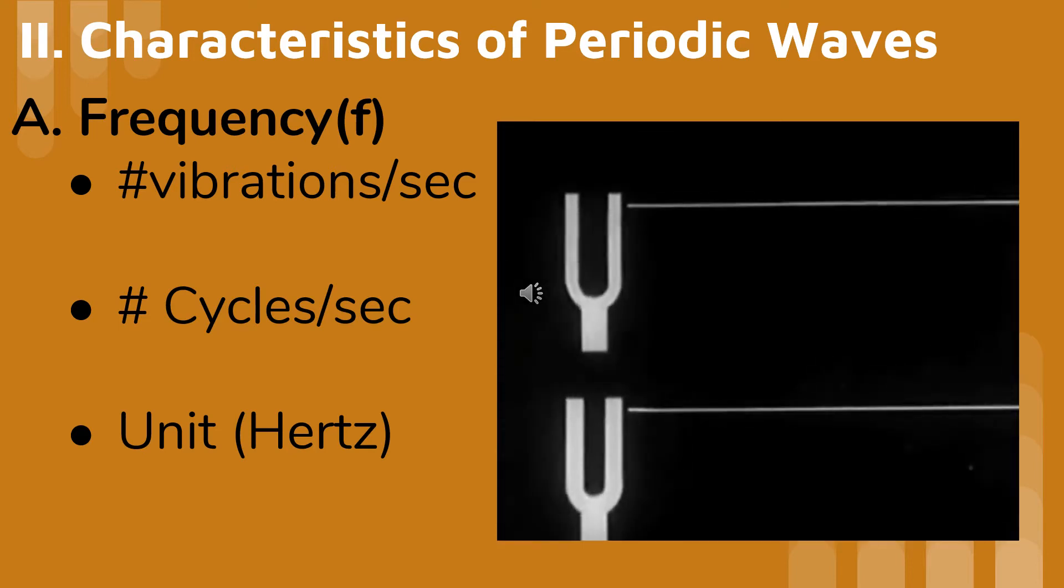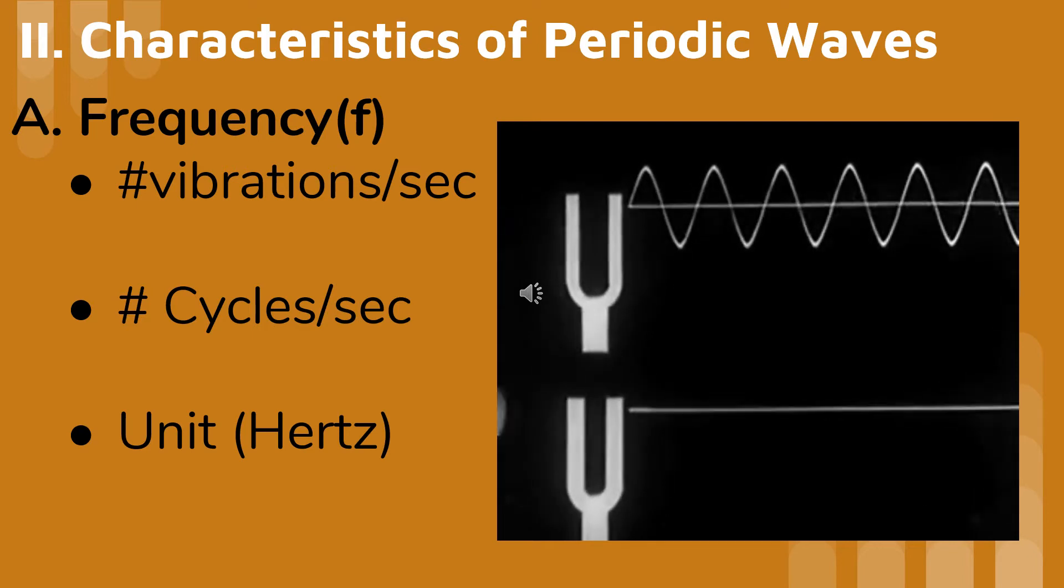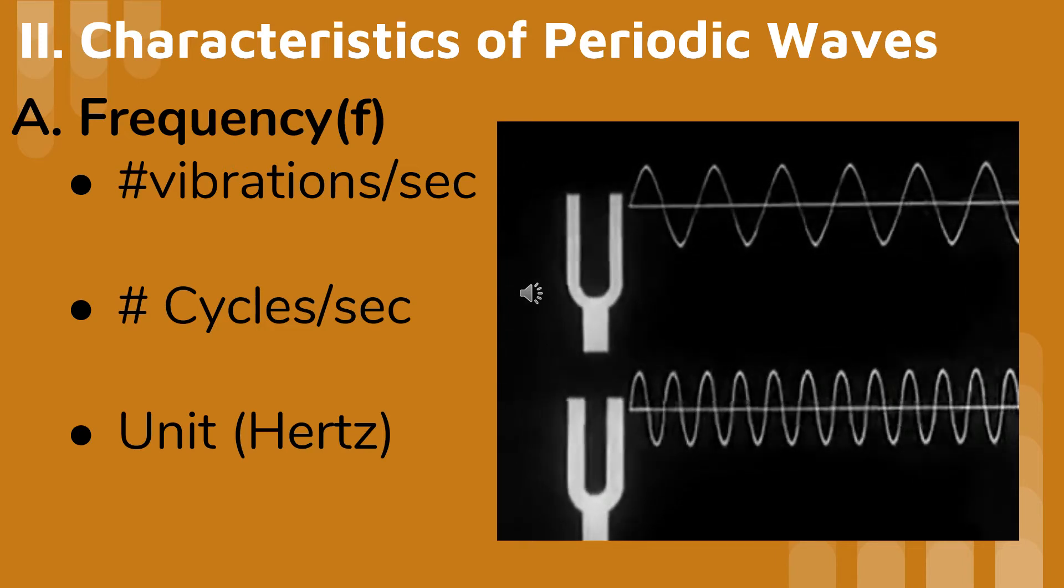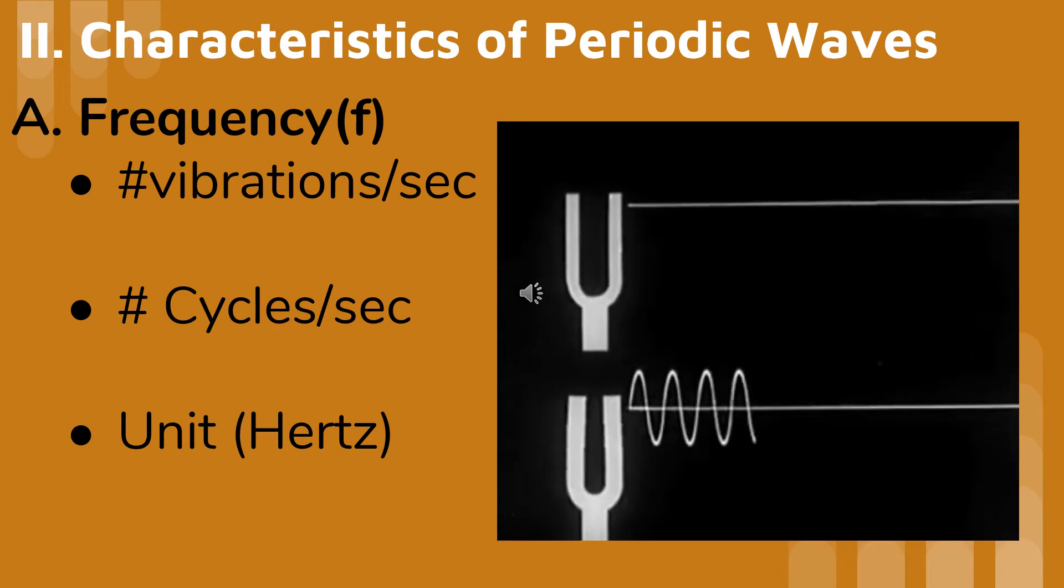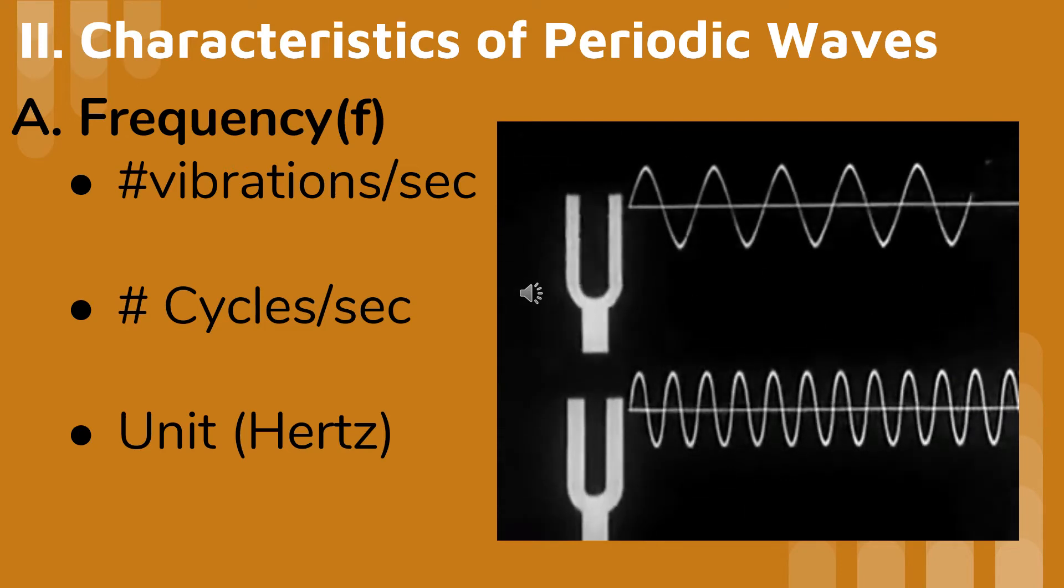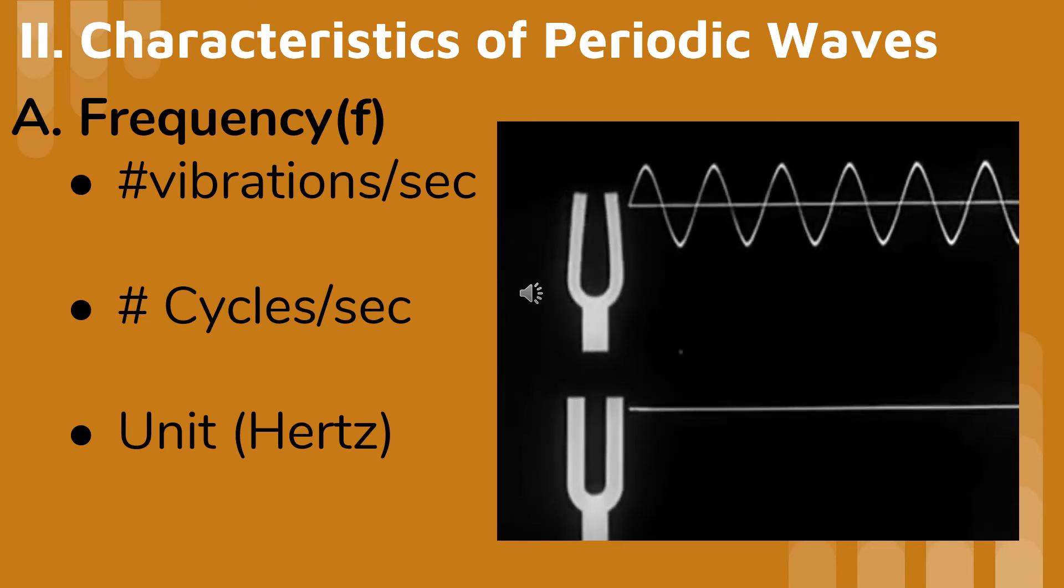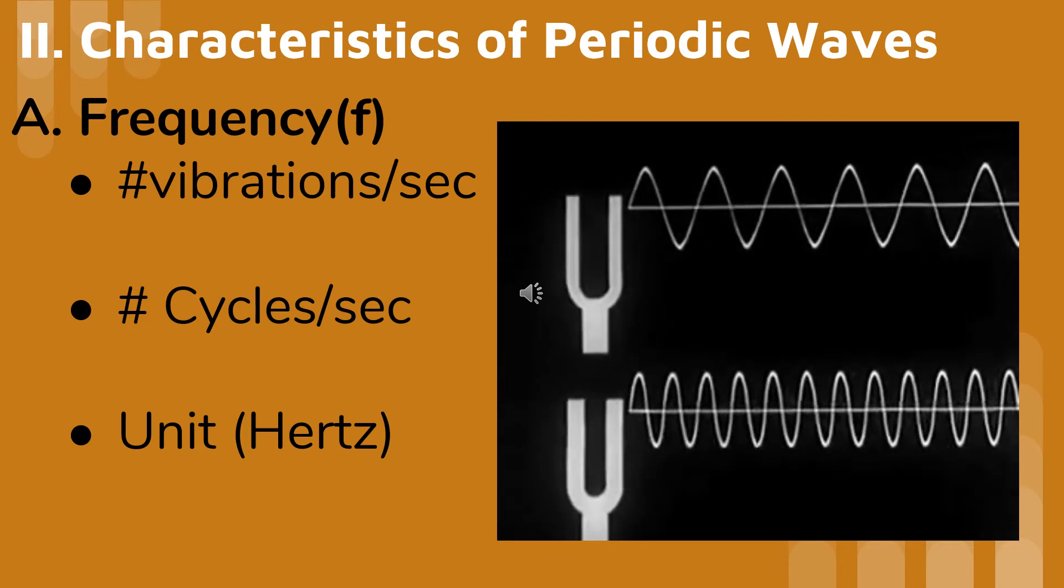To explain such differences, we picture two different sound waves. Here, the lower fork makes more complete vibrations per second. Therefore, its frequency is greater. It is evident that the one with the greater frequency has the higher pitch.